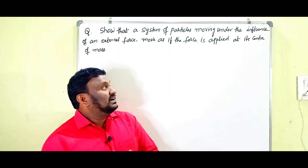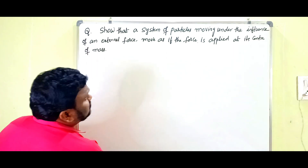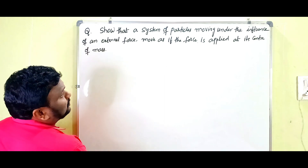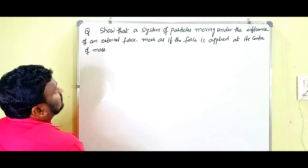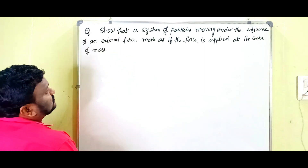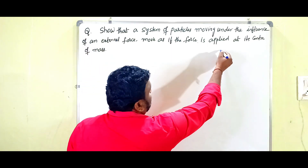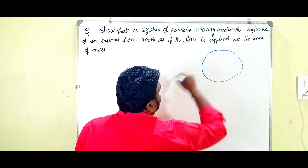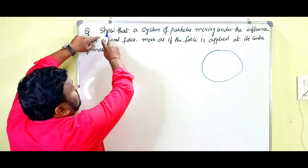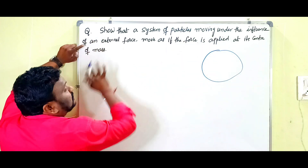So let's look at this question. Show that a system of particles moving under the influence of an external force moves as if the force is applied at the center of mass. So show that a system of particles moving under the influence of an external force — here there is one body having so many number of particles.